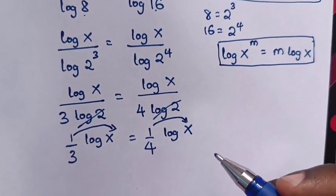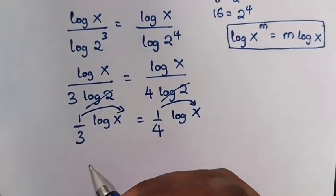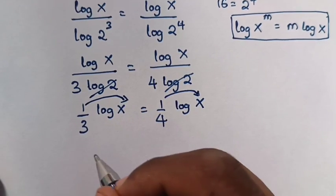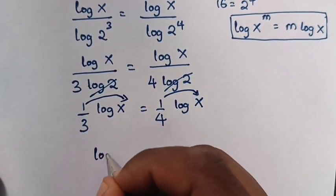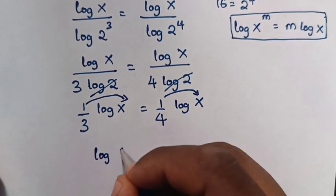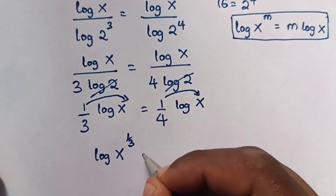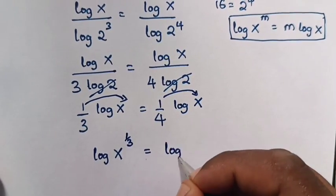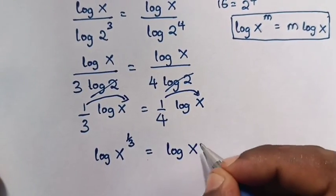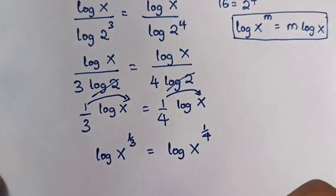It will be log x power 1 over 3 is equals to log x power 1 over 4.